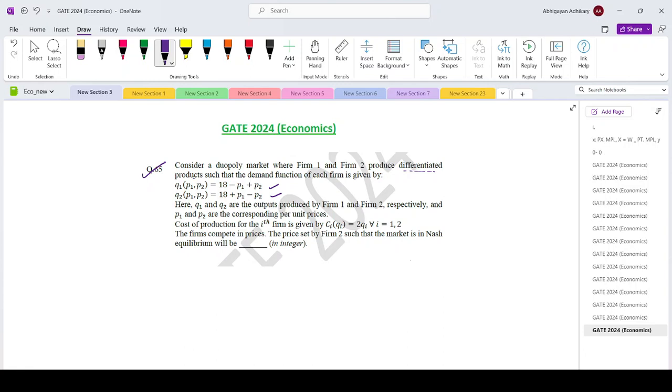Cost of production of the ith firm is 2Qi. The firms compete in prices, so it's a Bertrand competition. The price set by firm 2 such that the market is in Nash equilibrium is how much?